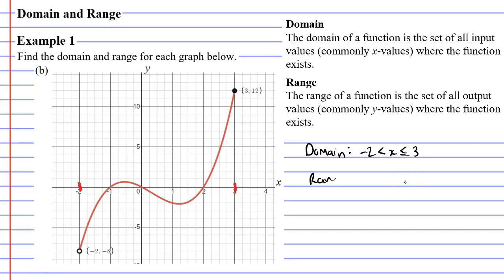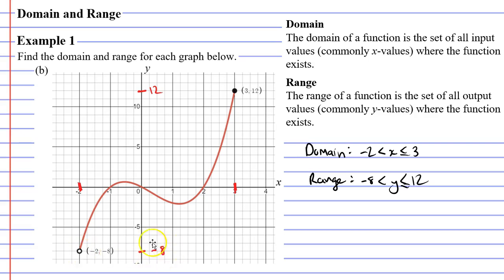Now let's calculate the range, looking at the vertical axis. The function exists between the point where y is 12 and the point where y is negative 8. For the range, we state the function exists for y values between 12 and negative 8. We need to use the strict less-than sign here — not less-than-or-equal-to — because of the hollow point. The function doesn't actually exist at negative 8 but exists for all values leading up to it.